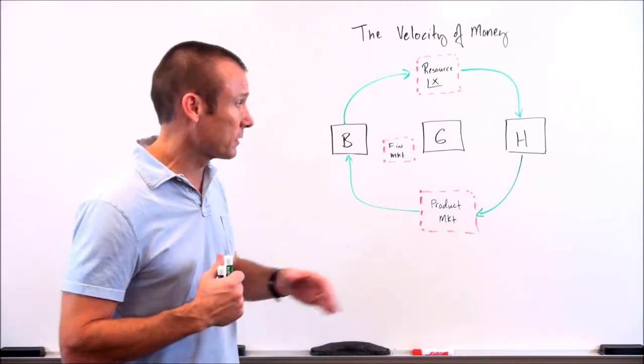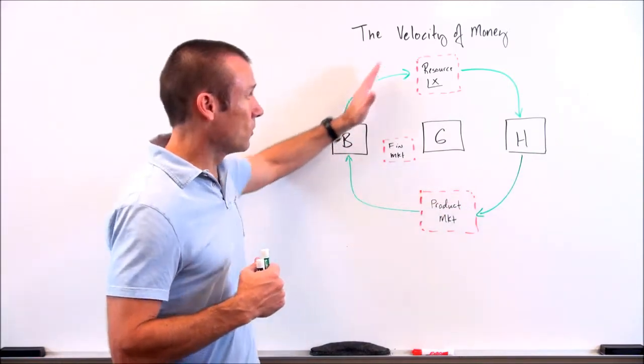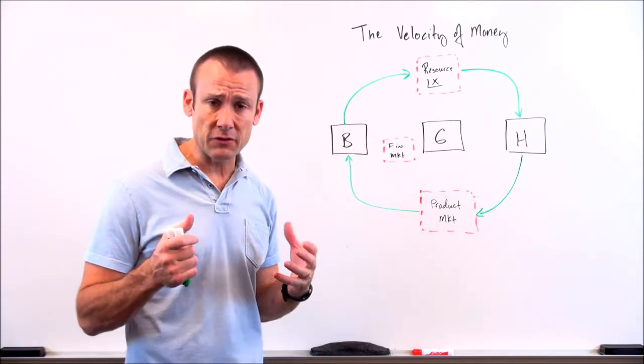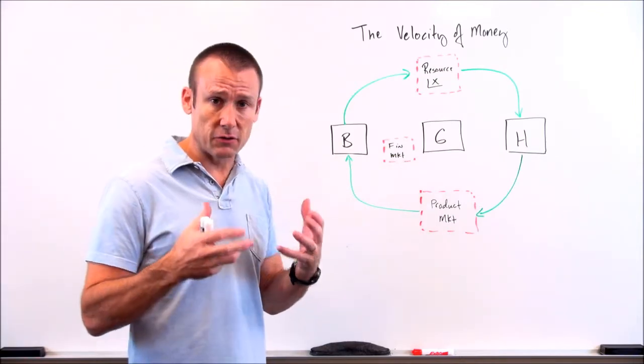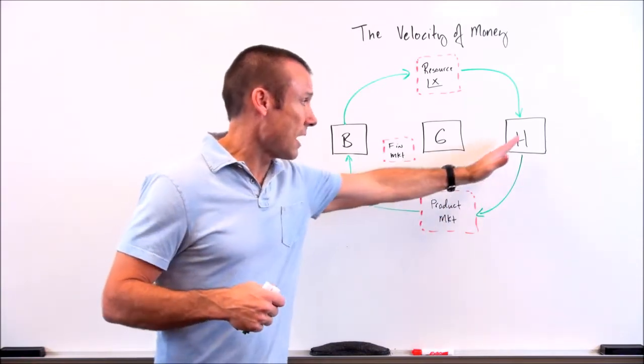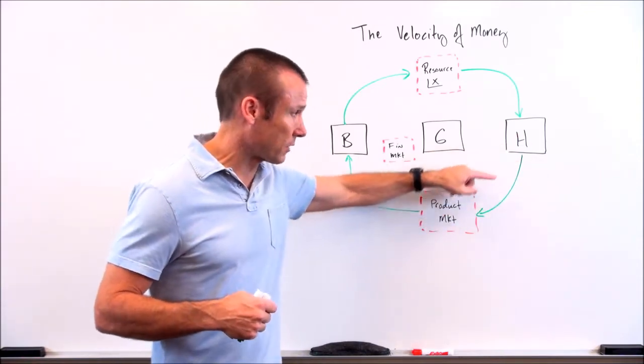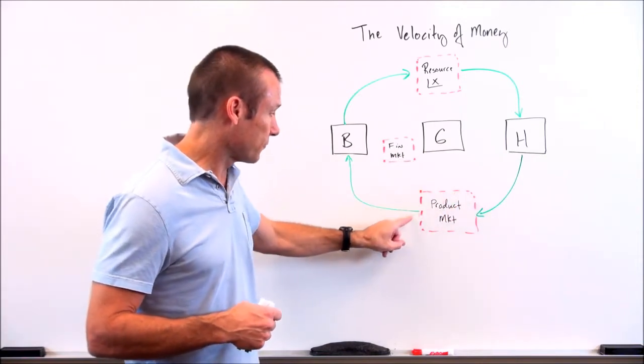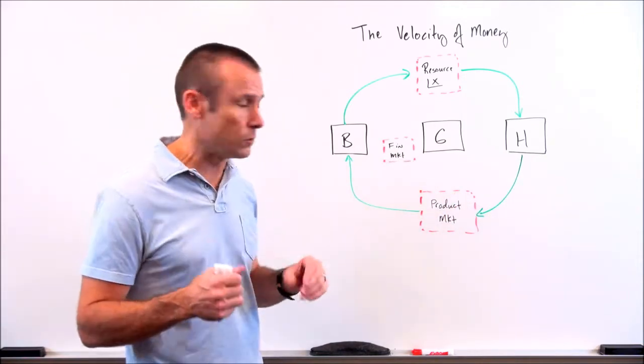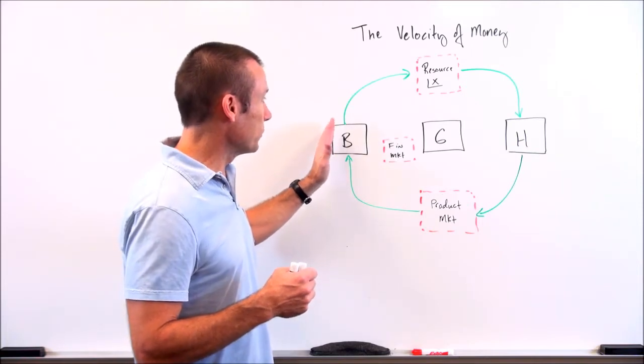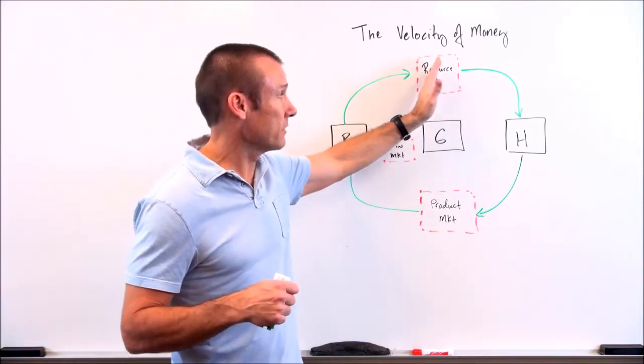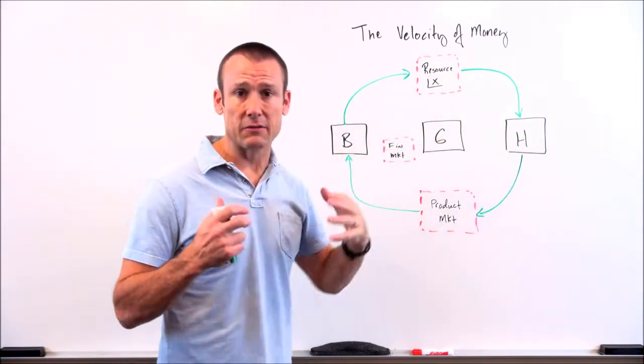Now, why is it called a circular flow? Because money tends to flow in a circle. Certainly, there are leakages and injections to this circle, but the main circle, the main way money flows is households spend money in the product market. This green arrow is a money flow, spend money in a product market. That money flows to businesses as revenue.